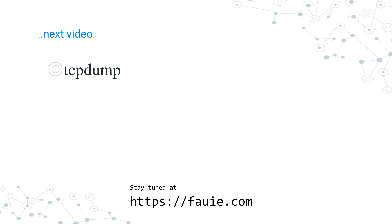Now that we've covered the basics of network packets and the OSI model layers, it's time to capture some packets on the network. In our next video, we'll use a program called TCP dump to store some live network traffic for analysis. Don't forget to keep an eye out for our next video at FAUIE.com. If you have any questions, you can reach out at Chris at FAUIE.com. We'll see you next time.